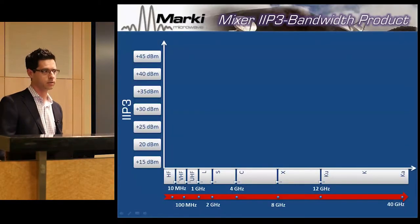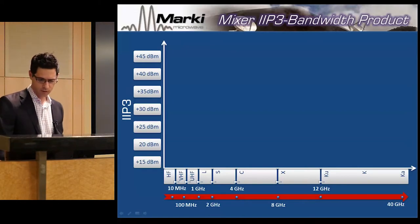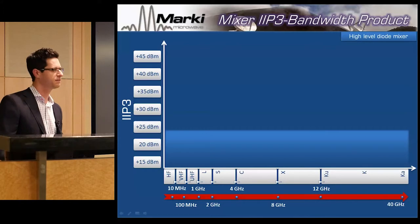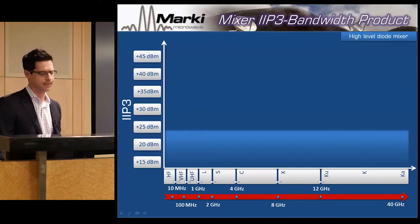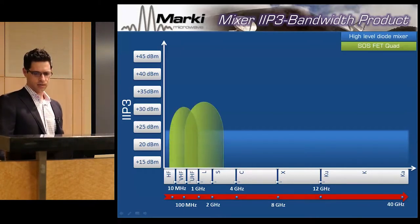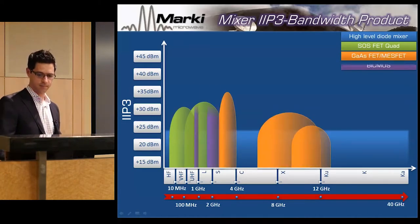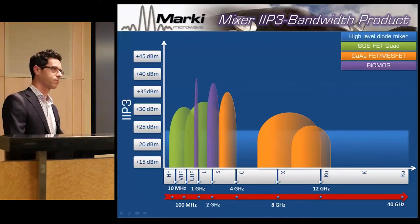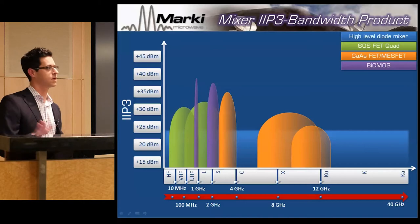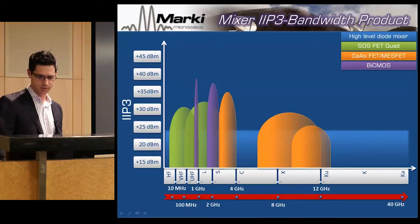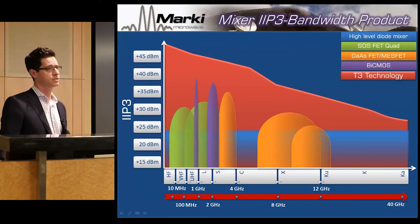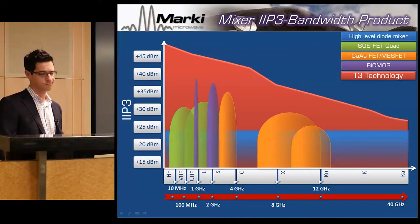How does this compare to other mixer types on the market? Standard diode mixers can be about 25 dBm input intercept. There's a silicon on sapphire FET quad — a passive FET-type switching mixer — along with MESFET and BiCMOS types. These are basically the top results when you search for high IP3 mixer. The T3 in a single unit covering 10 MHz to 20 GHz can offer almost 40 dBm input intercept the entire way — but that's if you engineer the LO drive. With just a sine wave it'll be good, but not quite that good.